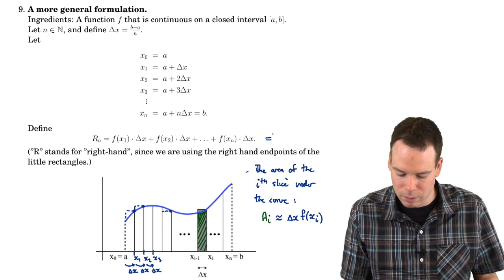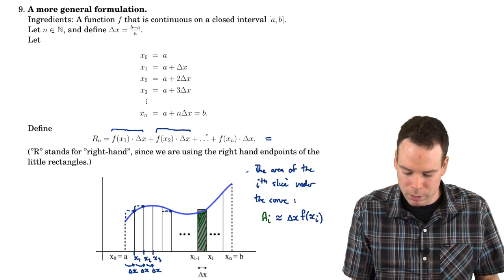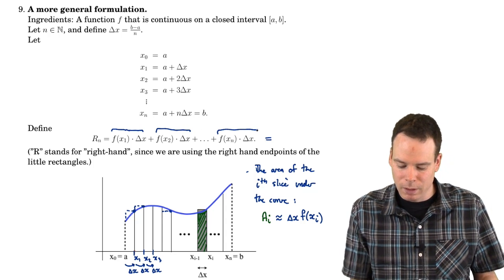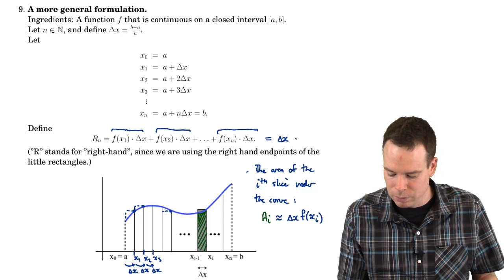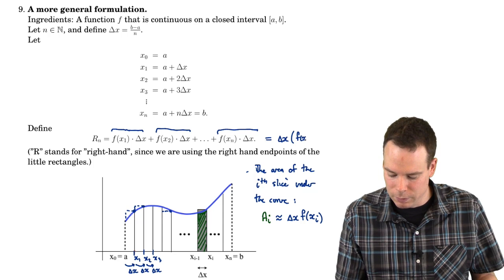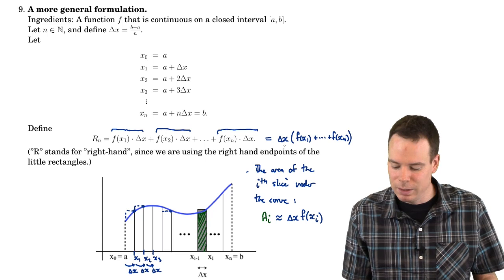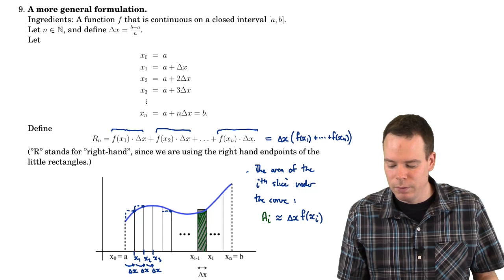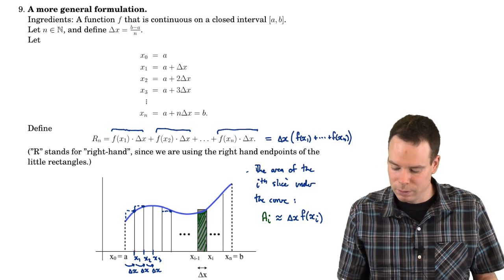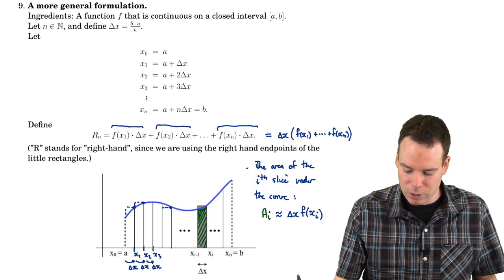R_n is just the sum of the areas of each rectangle — rectangle 1, rectangle 2, all the way up to the last rectangle. They all have factors of delta x in common because we took equal-width intervals. So I can factor out delta x and get that it's delta x times f of x1 plus all the way up to f of x_n. Looking back at the example we did, that's exactly what we saw — a delta x out front and these x_i values all squared, because the function was the squaring function.